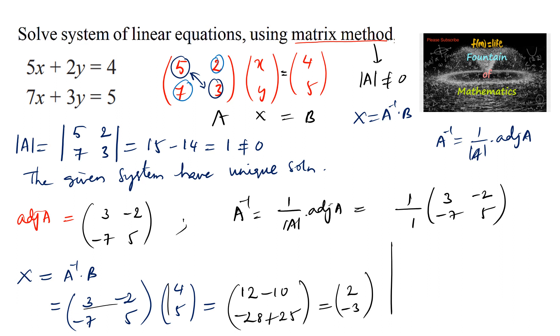The variable matrix [x; y] equals [2; -3]. By equating the two matrices, we can conclude that x equals 2 and y equals negative 3. This is the solution for the given system using the matrix method.